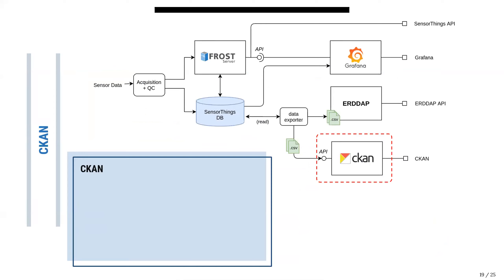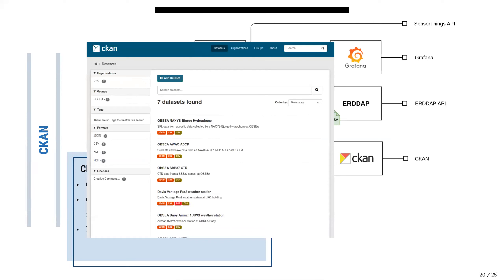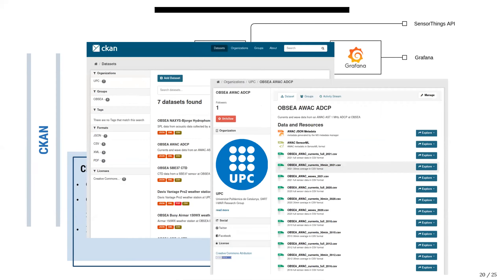The next service is CKAN, an open-source data management system that is very popular and mainly serves as a catalog of different resources. While ERDDAP provides an active way of slicing the data, CKAN provides access to datasets, data sheets, and metadata—essentially any kind of file can be accessed through CKAN. It has both machine-to-machine and human interfaces.